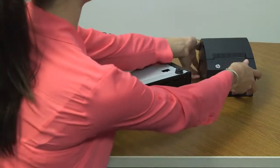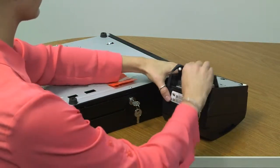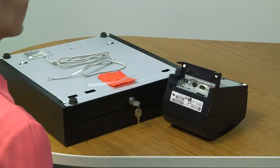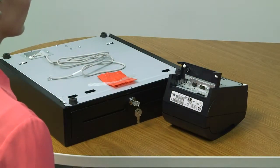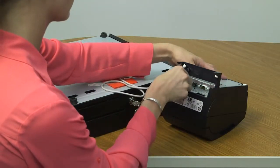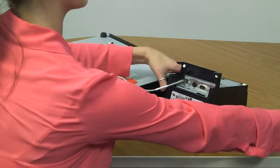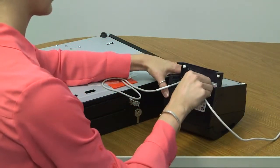Open the connector cover on the rear of the printer to expose the connectors. Connect the network cable from the cash drawer to the back of the printer. Next, connect the printer to the USB hub using the USB cable.